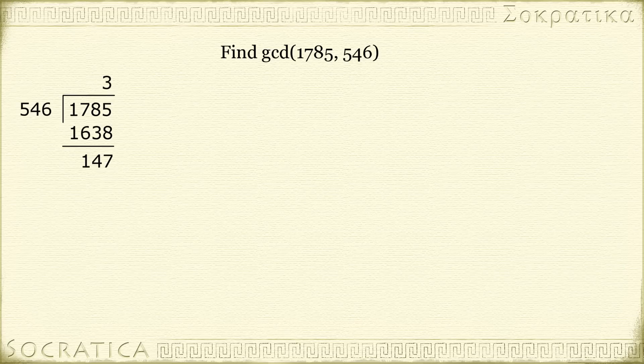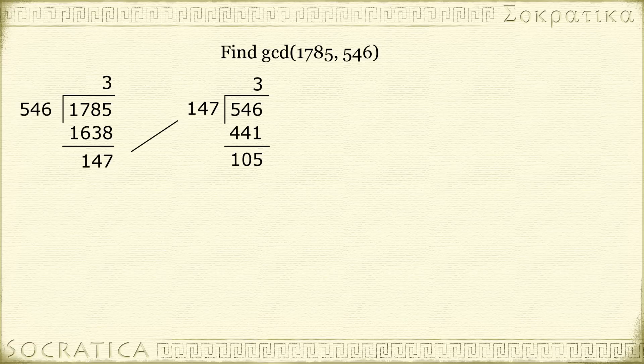Next, you're going to take your divisor — in this case 546 — and you're now going to divide it by the remainder, 147. You'll get a quotient of 3 and a remainder of 105.